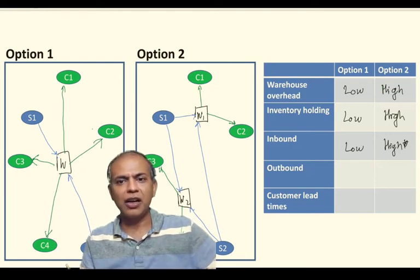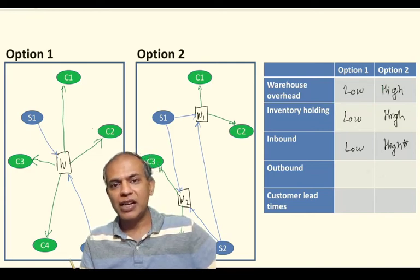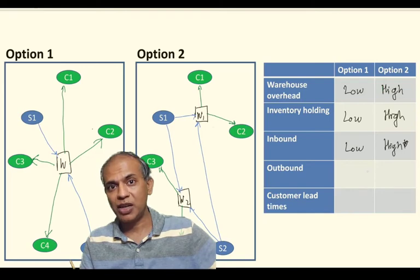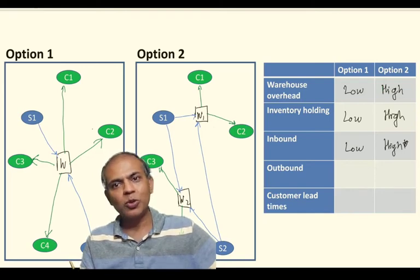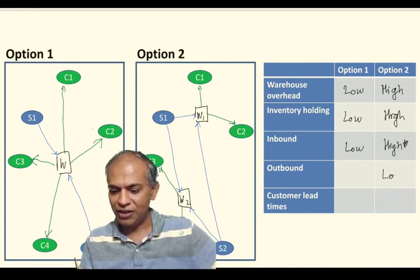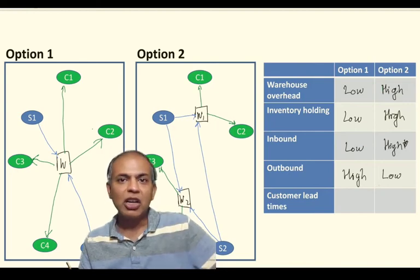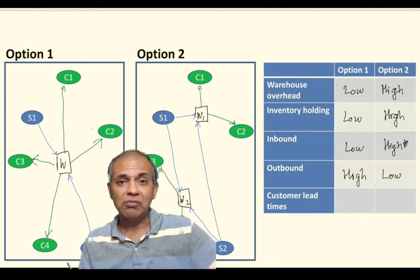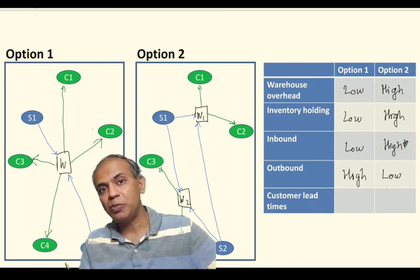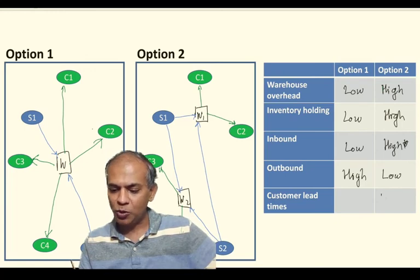But the last two entries make a huge difference. The parcel cost is a very expensive component. In option one, I'm sending parcels all over the country, which becomes expensive. But in option two, the parcel service is just within the region, so the outbound cost of option two is definitely lower. And the customer lead time also improves, because the warehouses are closer to the customers. We can offer same day or next day delivery much more easily and cheaply in option two compared to option one, so customer lead times would be lower.